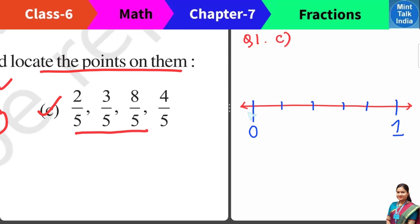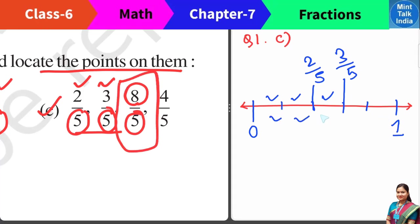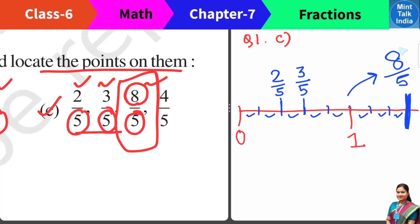Next is question C — denominator is 5, so we divide the number line into 5 equal parts. First is 2 by 5: out of 5 equal parts, 2 parts. This is 1 part, this is 2 part — that position is 2 by 5. Second is 3 by 5: out of total 5 equal parts, 3 parts — 1, 2, and 3 — that position is 3 by 5. Then 8 by 5 means 8 parts out of total 5 equal parts — this is an improper fraction. On the number line, we have 5 parts and we extend 3 more parts to the right to get a total of 8 equal parts.